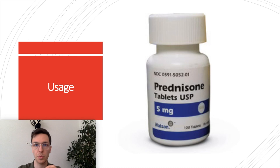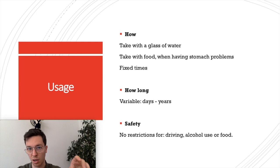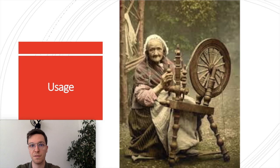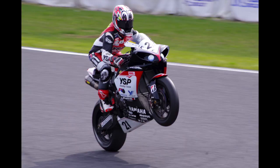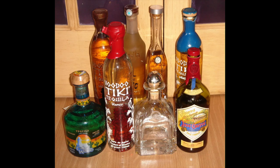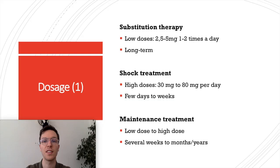When using prednisone, always take it with half a glass of water and with food if it causes stomach complaints. Always take it at a fixed time to maintain a consistent level of medication in your blood. Duration of use depends on the indication — from a few days to even years for chronic use. It is safe to use with any type of food, you can drive while using prednisone, and you can combine it with small amounts of alcohol without increasing side effects.